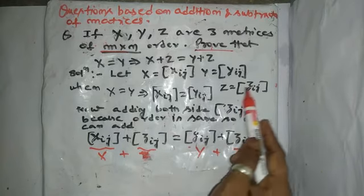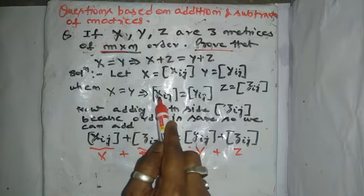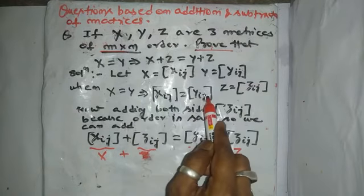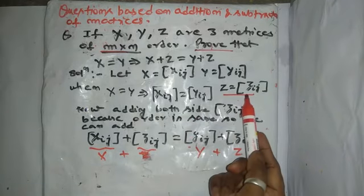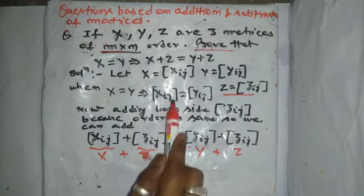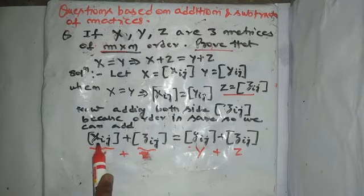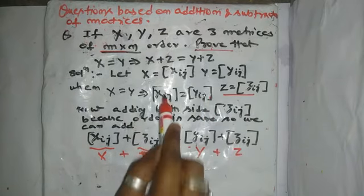Now, adding both sides, LHS side and RHS side means in Xij and Yij. What I will add? That is Zij. We can add because order of all matrices is same.